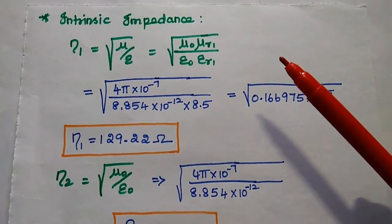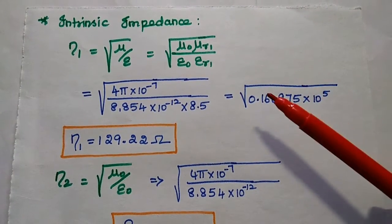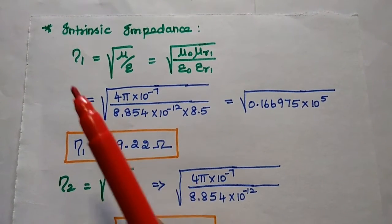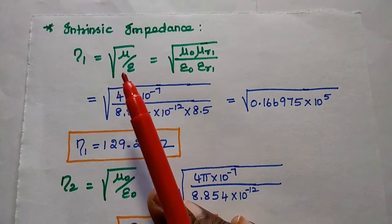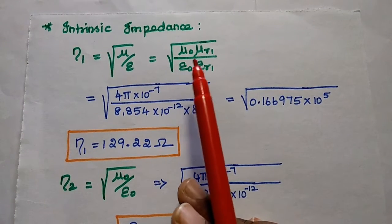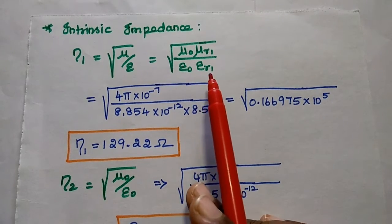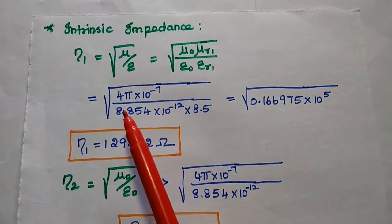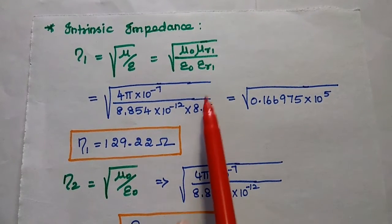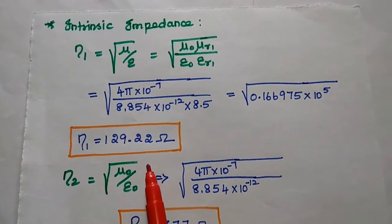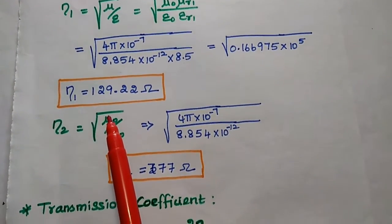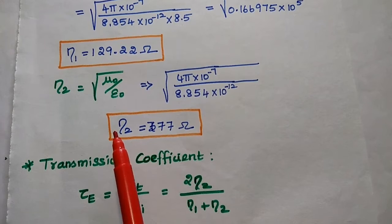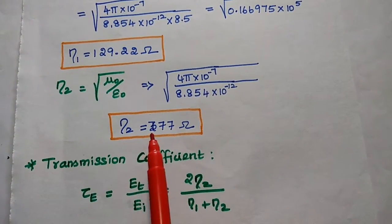First we find the intrinsic impedance for region 1 and region 2, from which we can calculate the transmission and reflection coefficients. For region 1, eta 1 equals square root of mu naught times mu R1 divided by epsilon naught times epsilon R1. With mu R1 equal to 1 and epsilon R1 equal to 8.5, we compute square root of 4π × 10⁻⁷ divided by 8.854 × 10⁻¹² times 8.5, giving eta 1 equal to 129.22 ohm. For region 2, free space, eta 2 is 377 ohm.